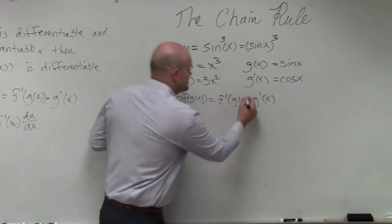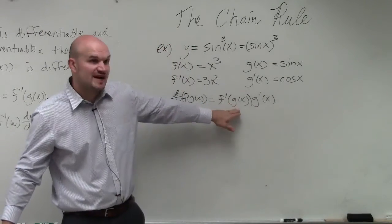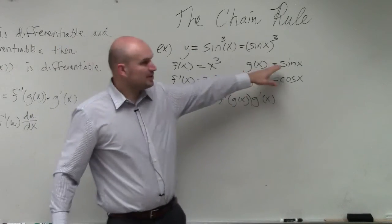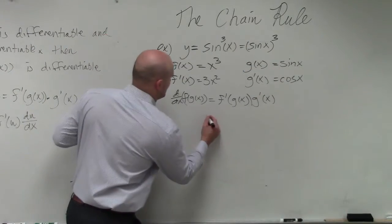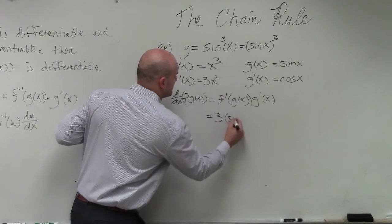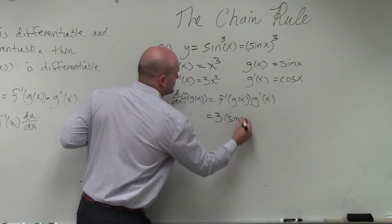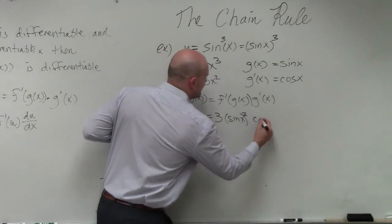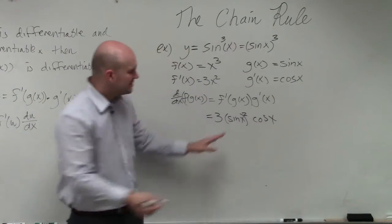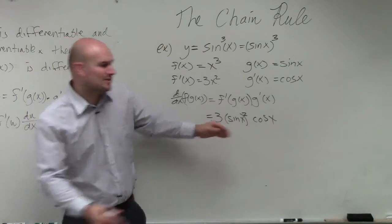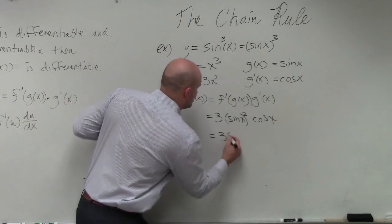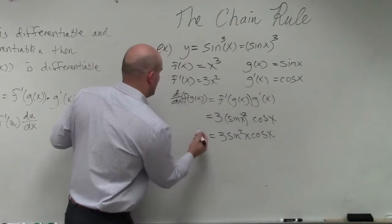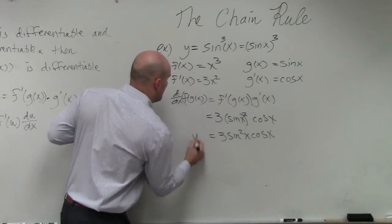So we need to do the composition of g of x into f prime. We have f prime is 3 times x squared, and we're going to plug in our g of x function, so that's going to look like 3 sine of x squared, and then times g prime of x, which is cosine of x. We don't really like sine as sine x squared, so we'll just rewrite this as 3 sine squared of x times cosine of x, and that is representing y prime, because that was our original equation.